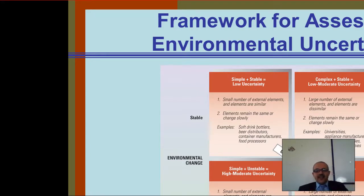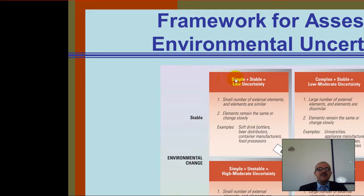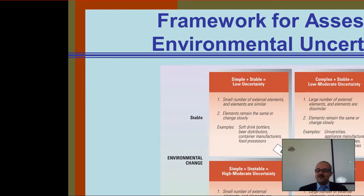Next, we've got complex and stable. It has a large number of external elements and elements are very dissimilar, but they remain the same or change very slowly. The example is universities. Here in LIU, every day we get students — same students. Some are smart, some are not very smart, but the elements are the same and change slowly.